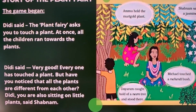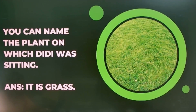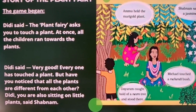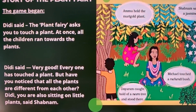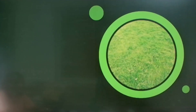'Bibi, you are also sitting on a little plant,' said Shabnam. Yes, it is grass! Now let us go back to this picture and understand which child is sitting or touching which plant. Ammo held the marigold plant; Shabnam sat near the jasmine plant; Michael touched the mehengi bush; Dayaram caught hold of a tree; and Dili is sitting on grass.